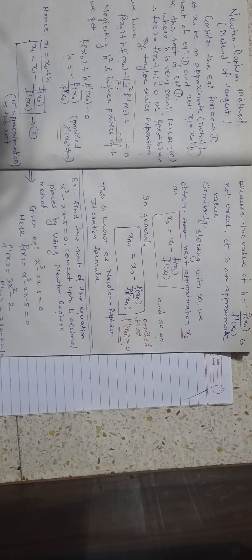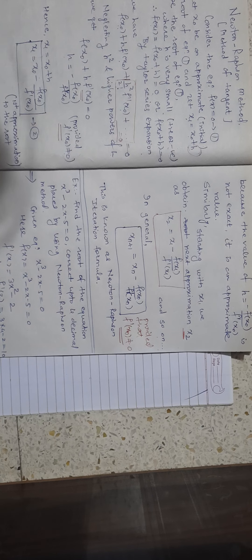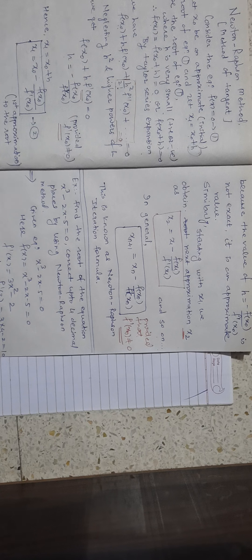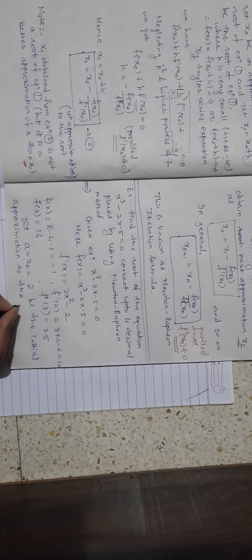For the initial approximation, we randomly evaluate: f(2) = 8 - 4 - 5 = -1, and f'(2) = 10. Then f(3) = 27 - 6 - 5 = 16, and f'(3) = 25. Since f(2) = -1 (negative) and f(3) = 16 (positive), the root lies between 2 and 3. We take x₀ = 2 as our initial approximation.